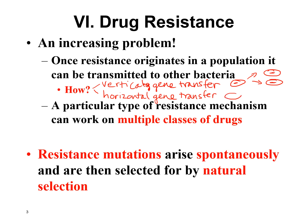For example, a staph bacteria might go up to an E. coli bacteria and say, 'I've got this really cool antibiotic resistance gene, let me give you a copy.' It can do this through a process called conjugation — making a copy of that gene and sending it over to the E. coli. What's really scary is that horizontal gene transfer can happen between bacteria that aren't even the same species.